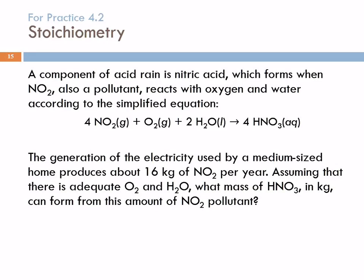I'm going to do another stoichiometry problem here. A component of acid rain is nitric acid, which forms when NO2, a pollutant, reacts with oxygen and water according to this simplified equation. The generation of electricity used by a medium-sized home produces about 16 kilograms of NO2 per year. Assuming there's adequate oxygen and water, what mass of nitric acid in kilograms can form from this amount of NO2 pollutant?